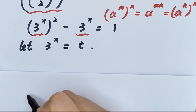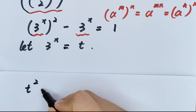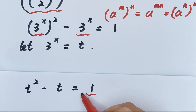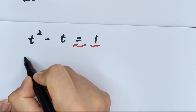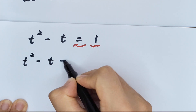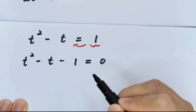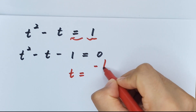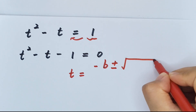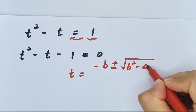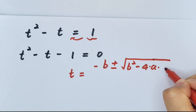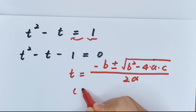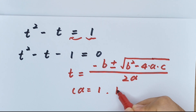Our equation becomes t squared minus t equals 1. Moving everything to the left side: t squared minus t minus 1 equals 0. We apply the quadratic formula: t equals negative b plus or minus square root of b squared minus 4ac, divided by 2a.